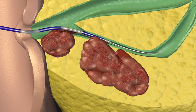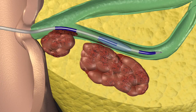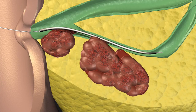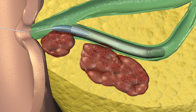When correctly positioned, the stent is deployed. After deployment, the delivery system and wire are removed.